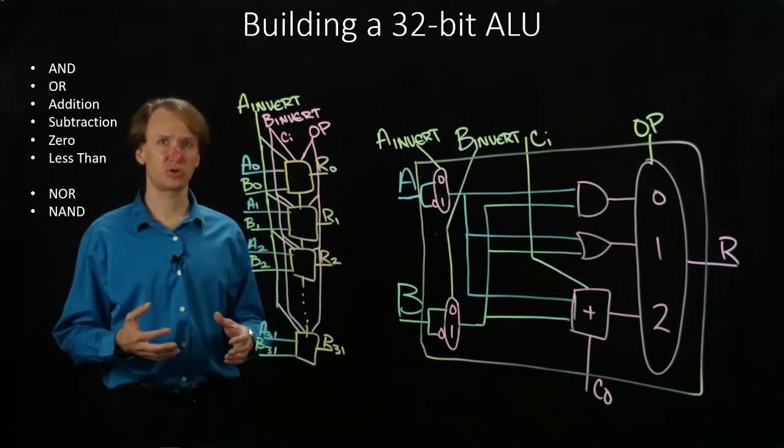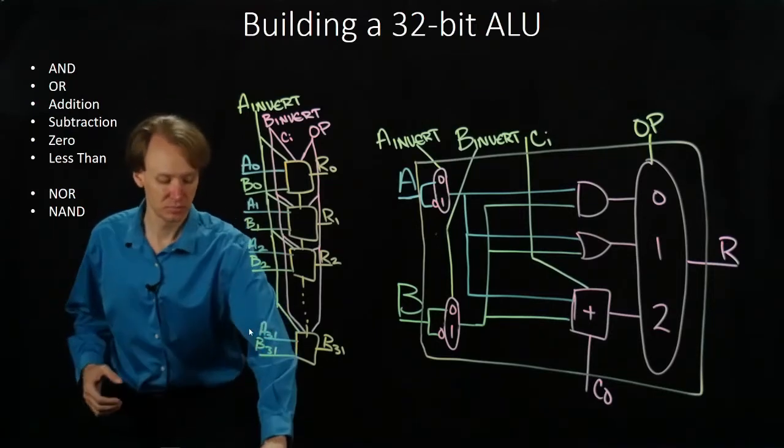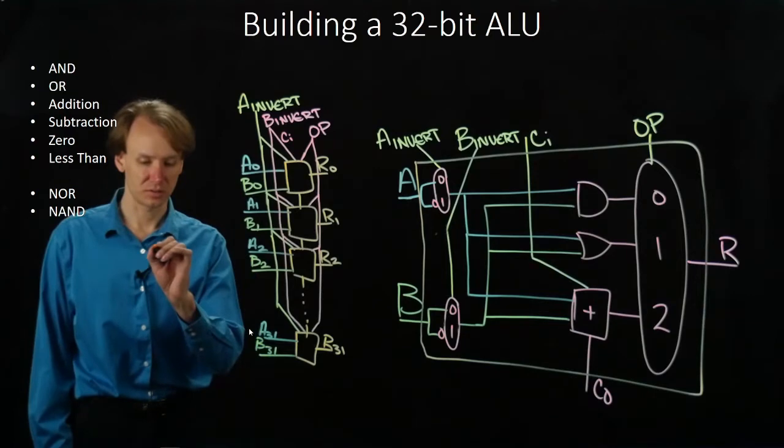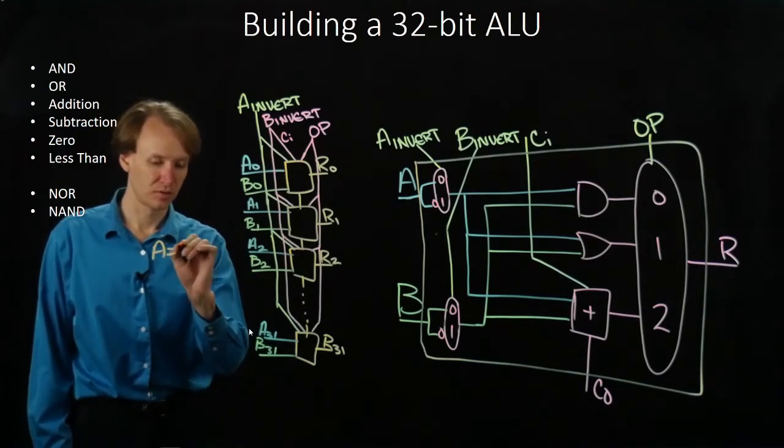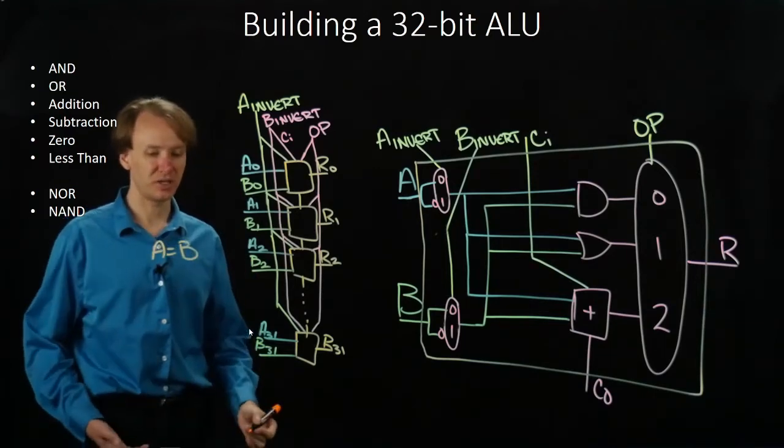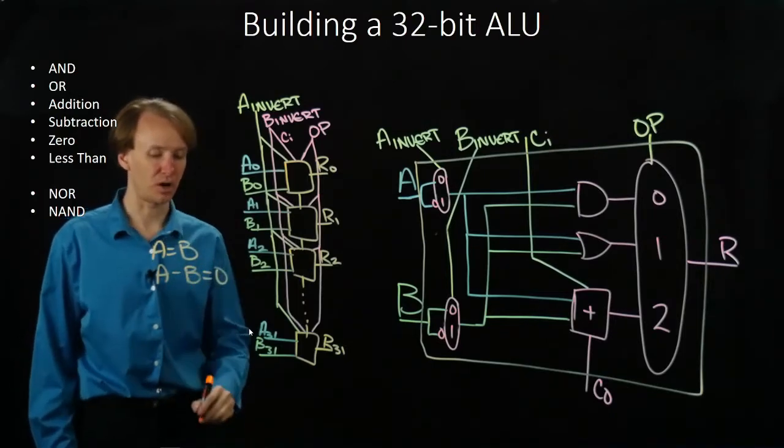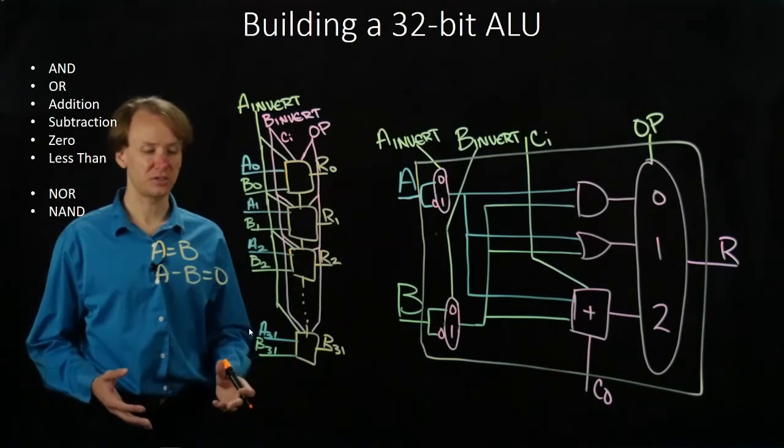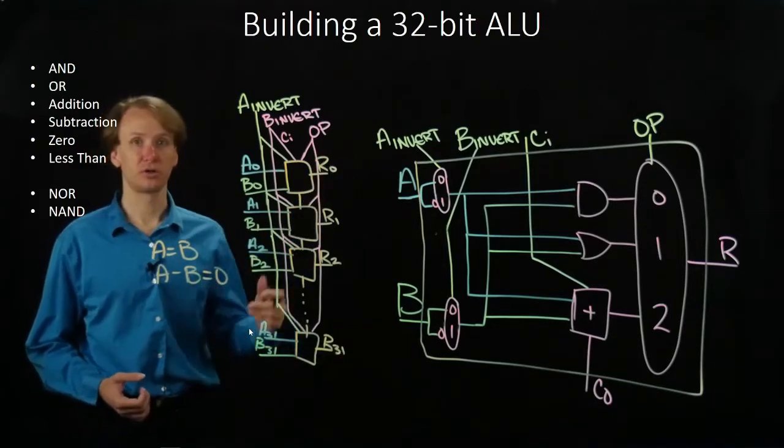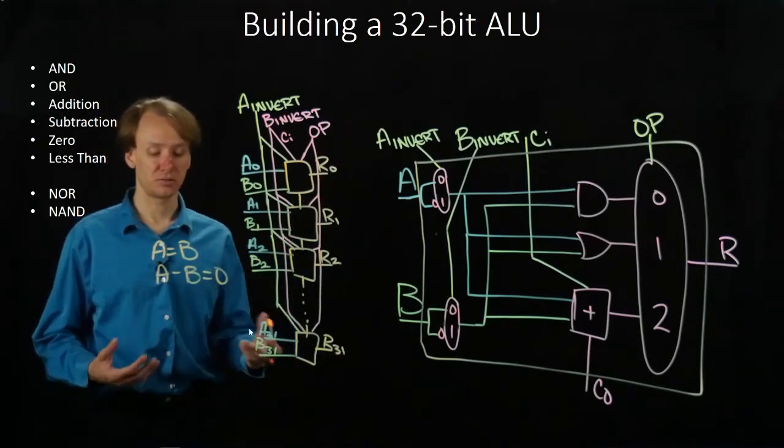We're going to use the same sort of strategy for both of them, because we can say that when a equals b, then a minus b equals zero. So if we can find an easy way to say our results are all zero, then we can do this.